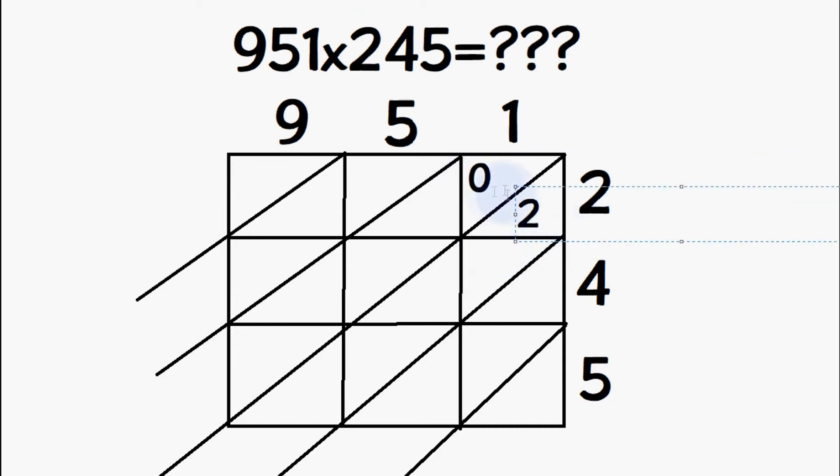So let's try 1 times 2 and the answer is 2, 5 times 2 which is 10, and 9 times 2 which is 18. Then we have 4 times 1, 4 times 5, and 4 times 9 which we've done here. And 5 times 1, 5 times 5, and 5 times 9.